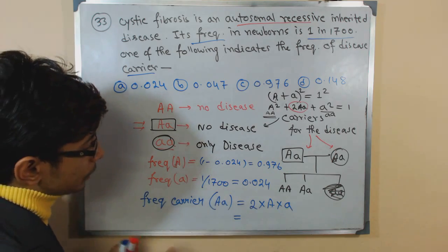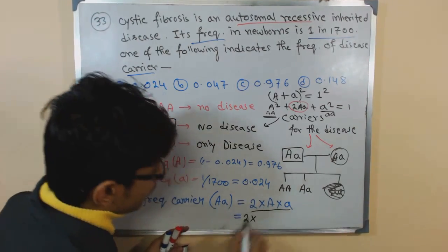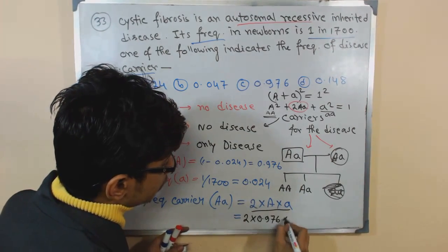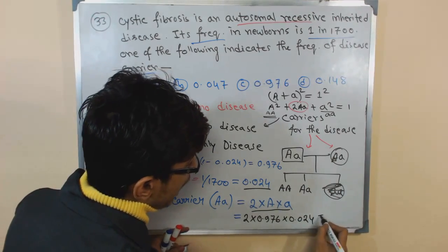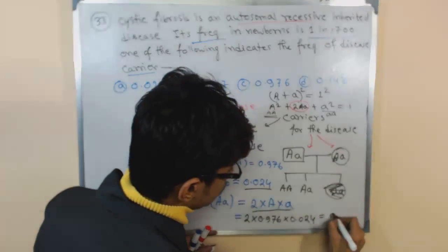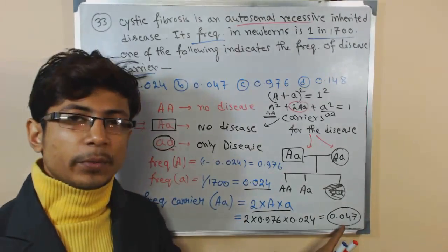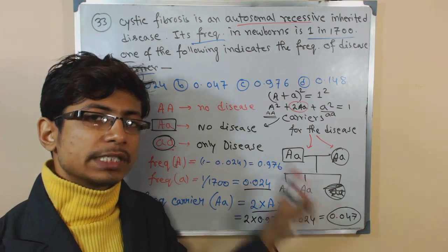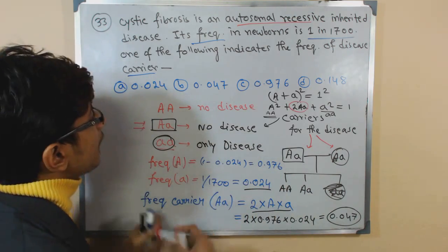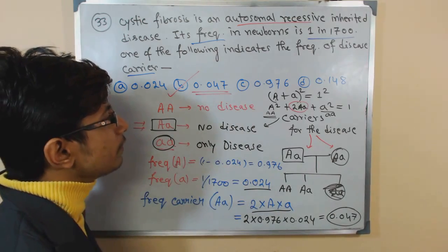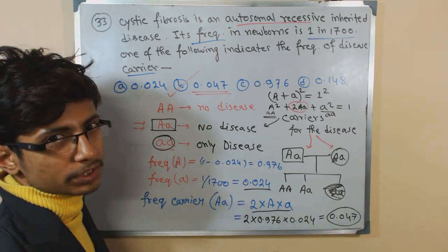Now we plug these values into the carrier frequency formula: 2 times 0.976 times 0.024, which gives 0.047. This is the frequency of the disease carrier for cystic fibrosis in this population. Option B contains 0.047, and that is the correct answer.